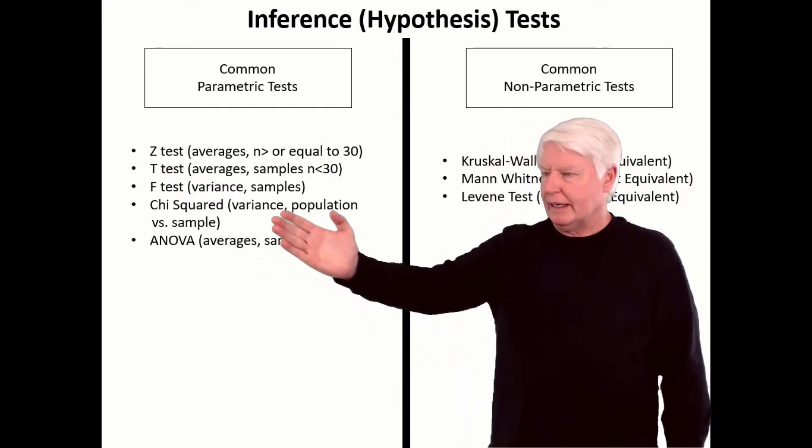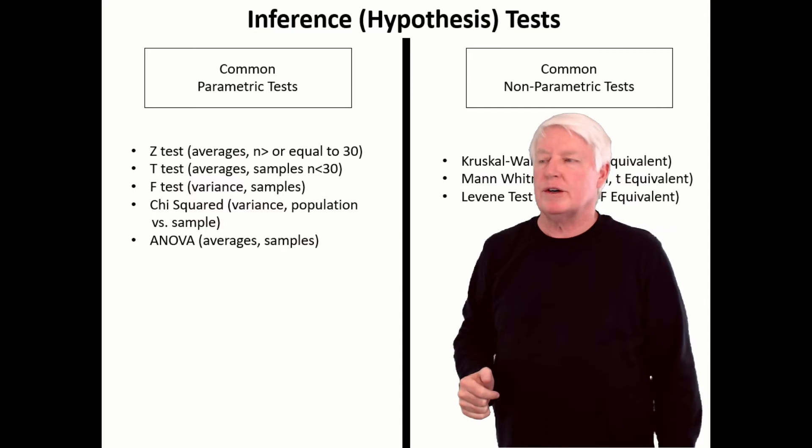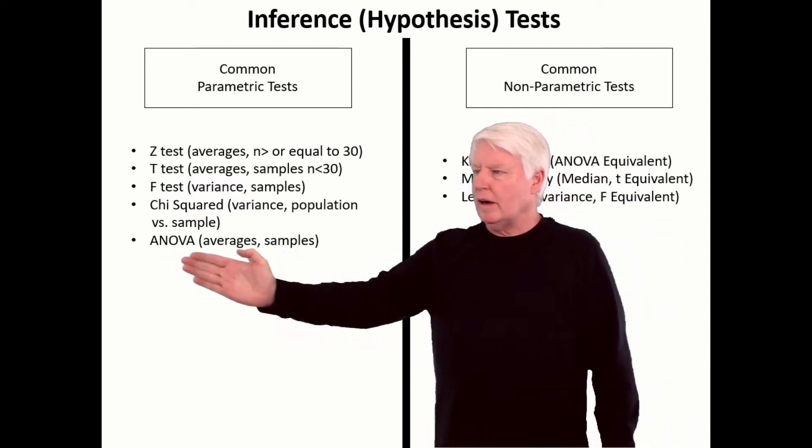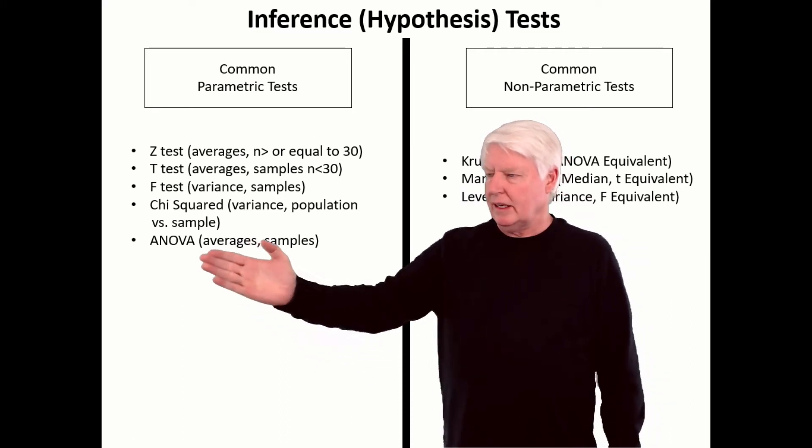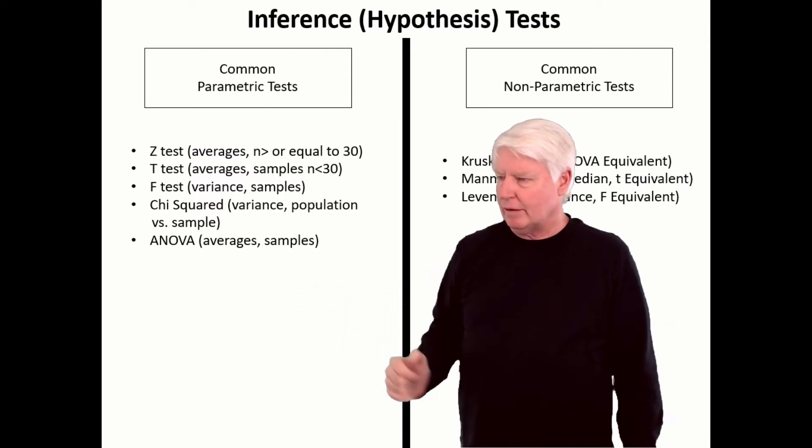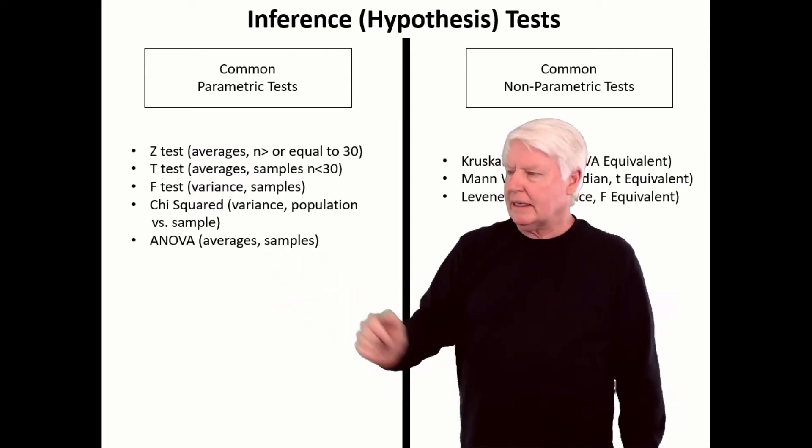Chi-squared is for variance when you're comparing population versus sample standard deviation or variances. And then ANOVA is also a parametric test. There's many different types of ANOVAs, but they're for averages also, and they use samples.